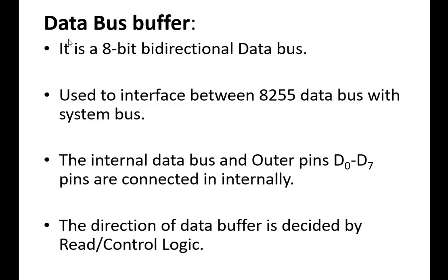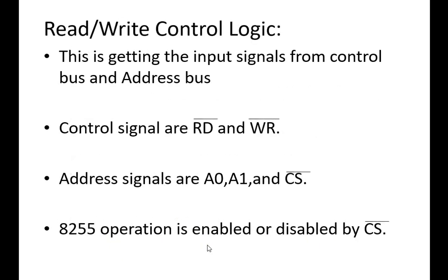Now, the data bus buffer. It is an 8-bit bidirectional data bus used to interface between the 8255 data bus and the system bus. The internal bus output pins are D7 to D0. The direction of the data buffer is determined by the read/write controller logic. The control signals are read and write. The address signals are A0 and A1, along with chip selection. The 8255 operation is enabled or disabled by the chip selection signal.